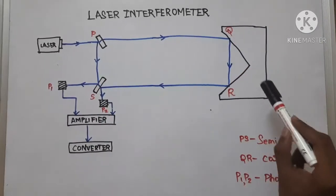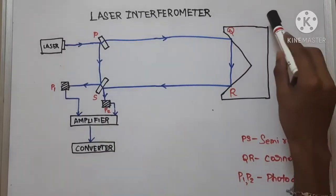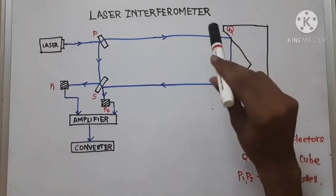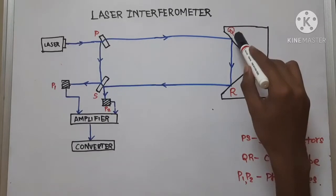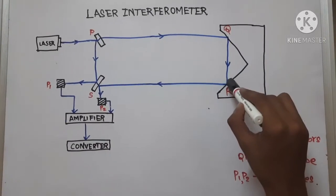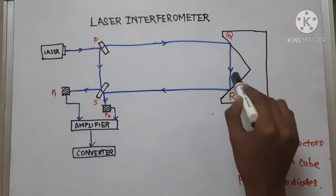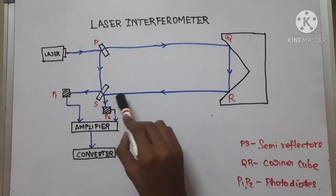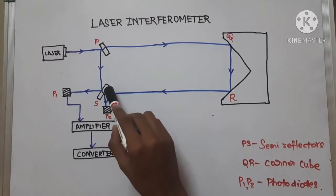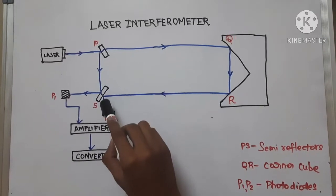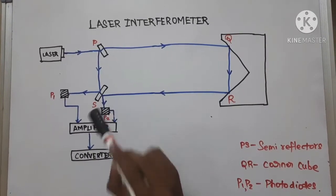The use of this corner cube is to reflect the light at 180 degrees. So the light gets reflected to this point R and it gets reflected. So a 180 degree reflection is obtained and this incident light hits the point at S and it gets reflected back to the point P2.